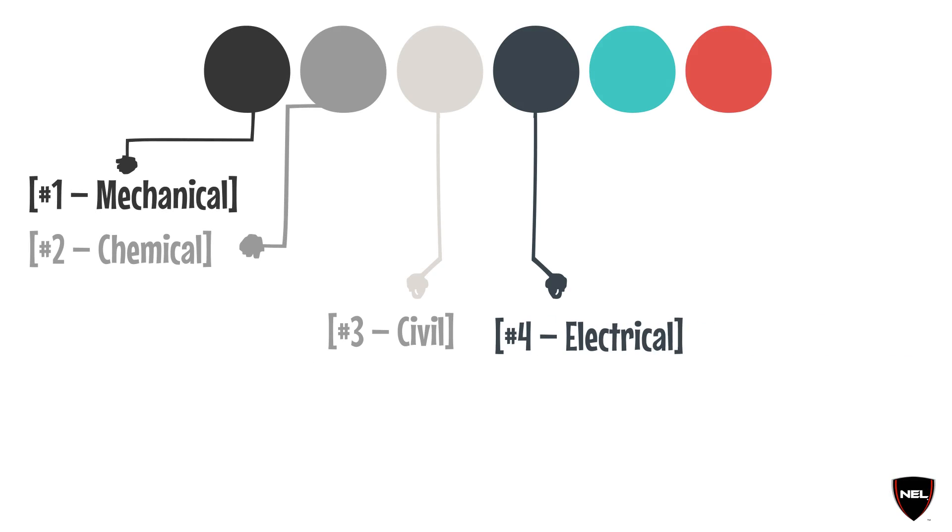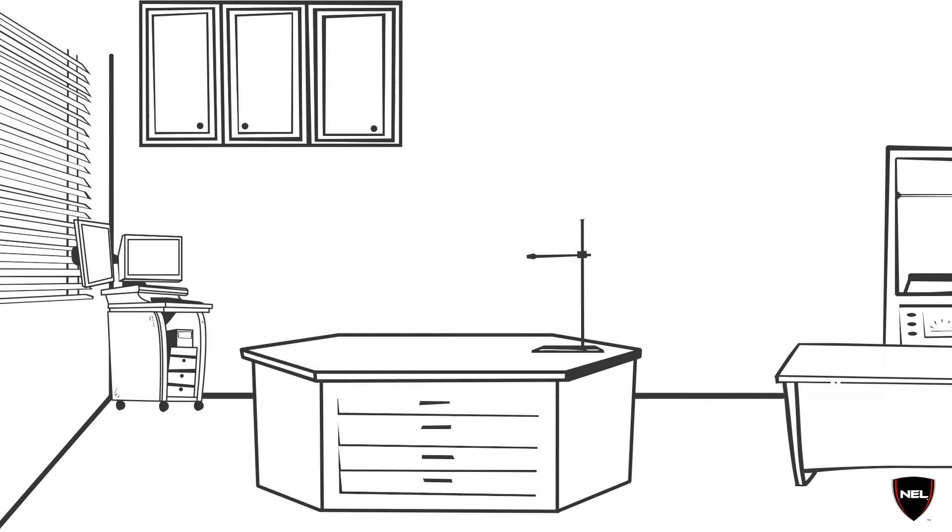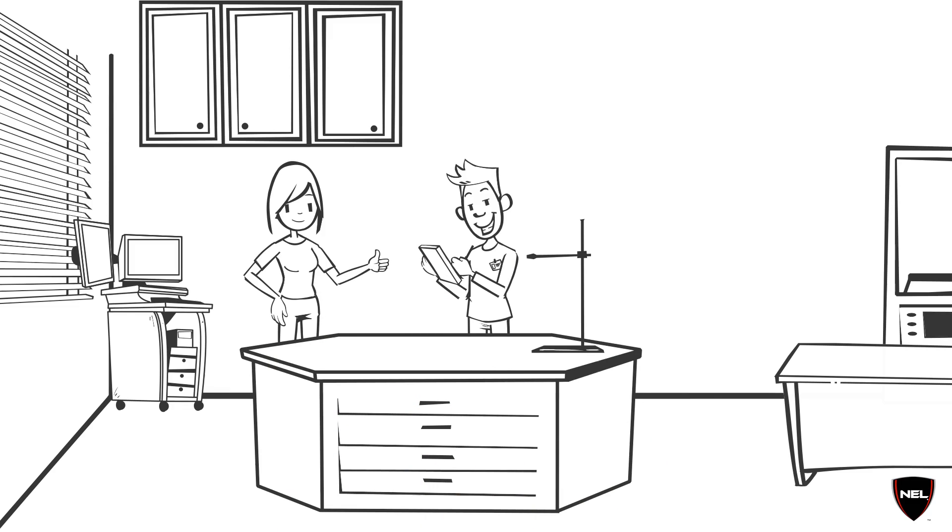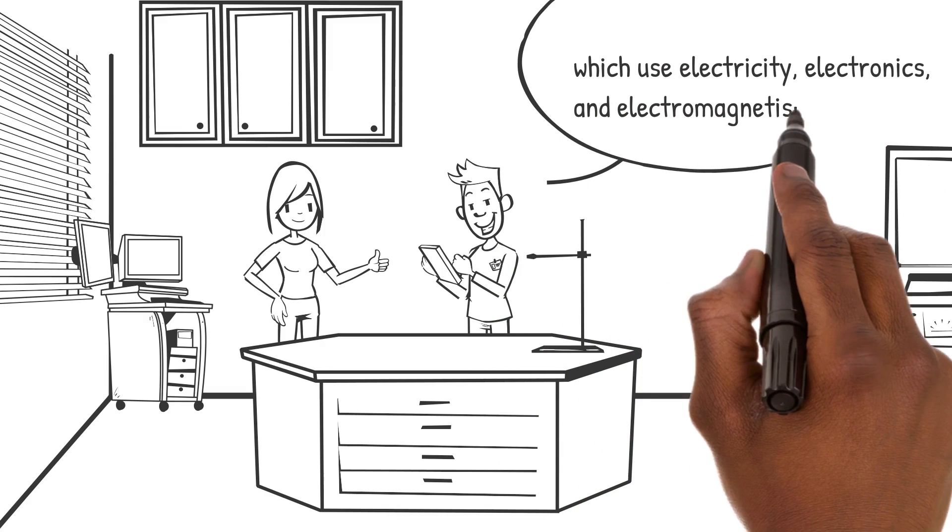Number 4, Electrical. Electrical engineering is an engineering discipline concerned with the study, design and application of equipment, devices and systems which use electricity, electronics, and electromagnetism.